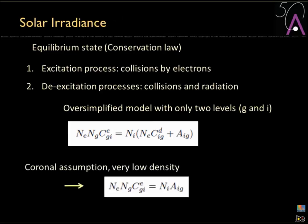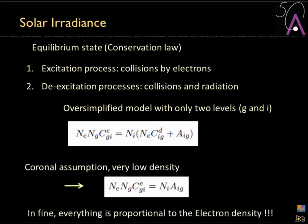Since we are in the corona, the very low density allows us to simplify this equation further. At the end, everything is proportional to the electron density: you have the electron density, the number of ions in the ground state, the rate coefficient, the number of ions in the excited state, and the Einstein coefficient for radiative decay.